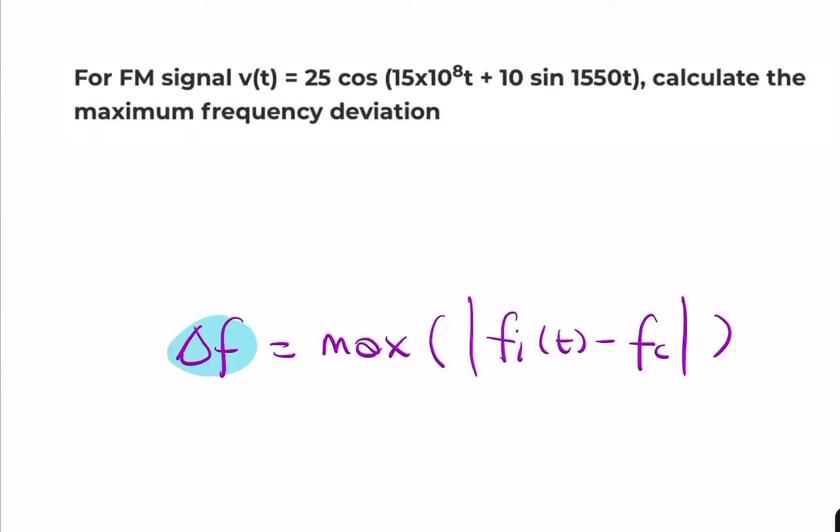What do we need to find? We need two things. We need to find the instantaneous frequency, and we need to find the carrier frequency. The carrier frequency is right there. It's that value divided by 2π, but it's the instantaneous frequency that we need to find.